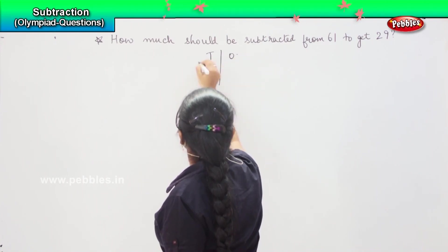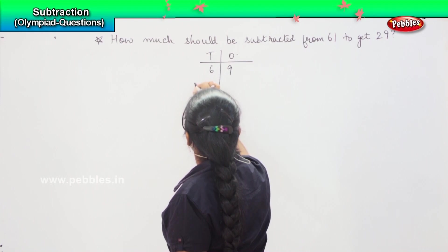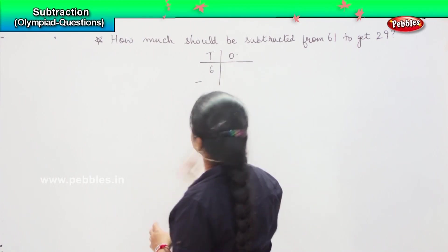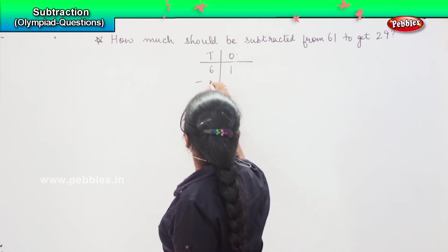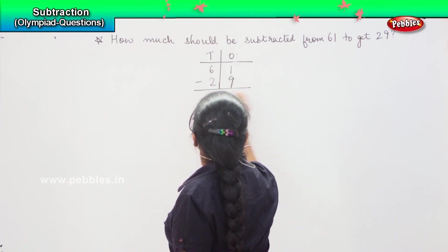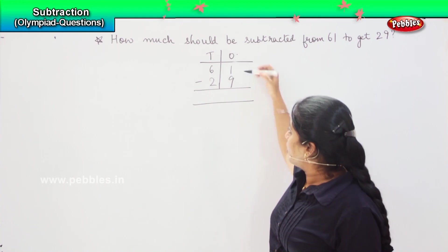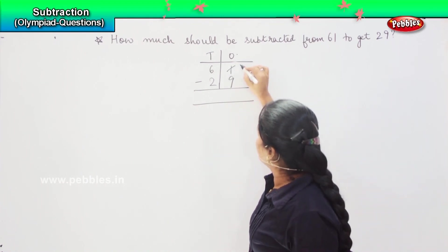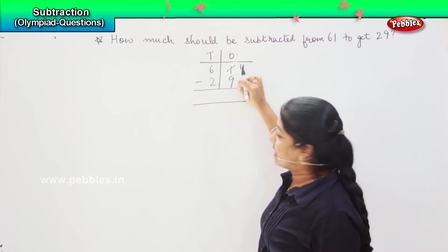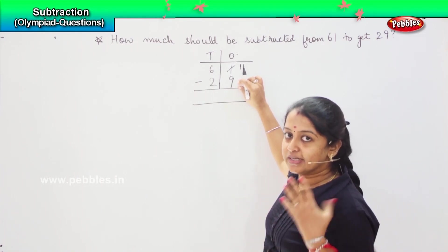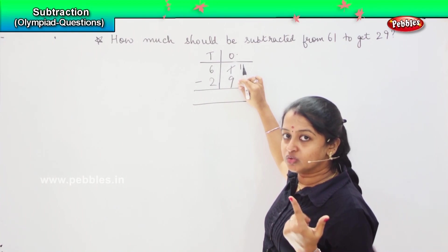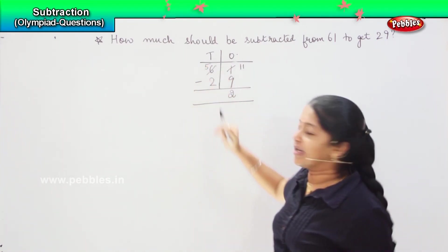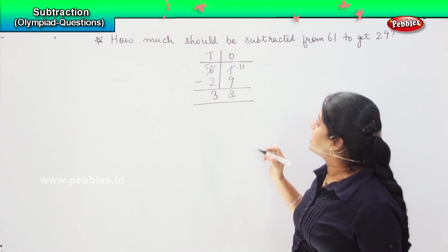Tens, ones — write down 61 here, minus 29. Can you subtract 1 from 9? No, it is not possible. So we need to borrow. It becomes 11. So, 11 minus 9 — counting down: 10, 9, 8, 7, 6, 5, 4, 3, 2. It will become 2 here and the tens digit will be reduced by one number. So, 5 minus 2 is 3. My answer is 32.